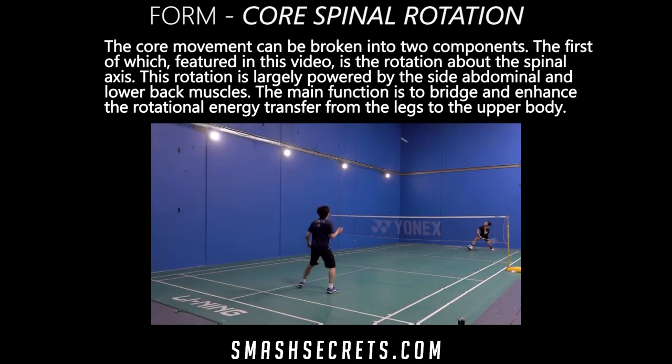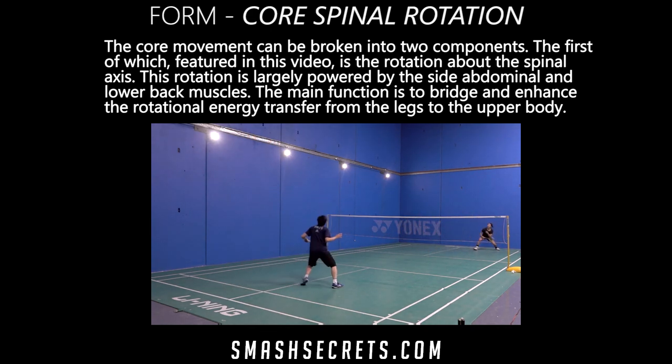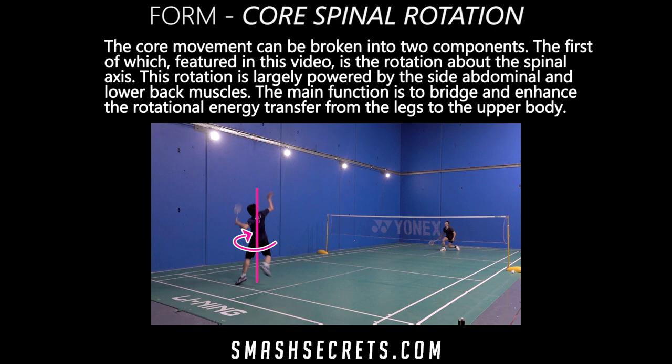The core movement can be broken down into two components, the first of which, featured in this video, is the rotation about the spinal axis. This rotation is largely powered by the side abdominal and lower back muscles, and its main function is to bridge and enhance the rotational energy transfer from the legs to the upper body.